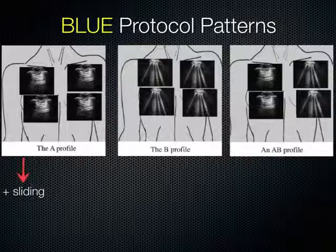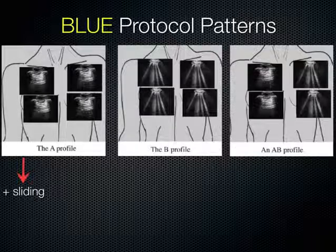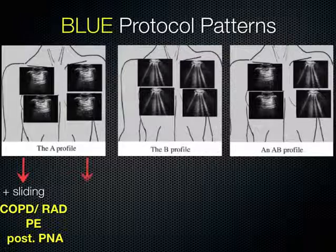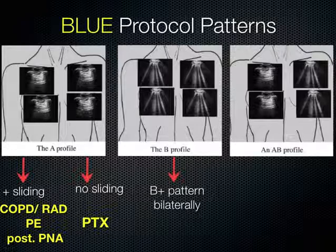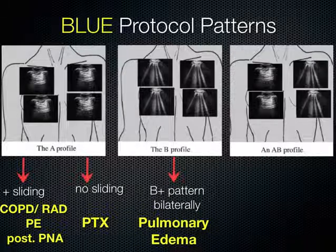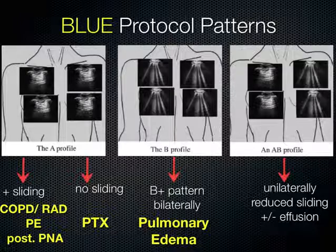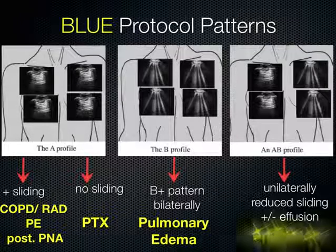Here are some examples. A predominant A profile with A lines on both sides and sliding turned out to be COPD, reactive airway disease, PE, or pneumonia in the posterior fields. Without sliding, pneumothorax was often the diagnosis. For a predominance of bilateral B lines, the common outcome was pulmonary edema. In something called an AB profile — B lines on one side and A lines on the other, or unilateral predominance — with reduced sliding and an effusion, the outcome was pneumonia.